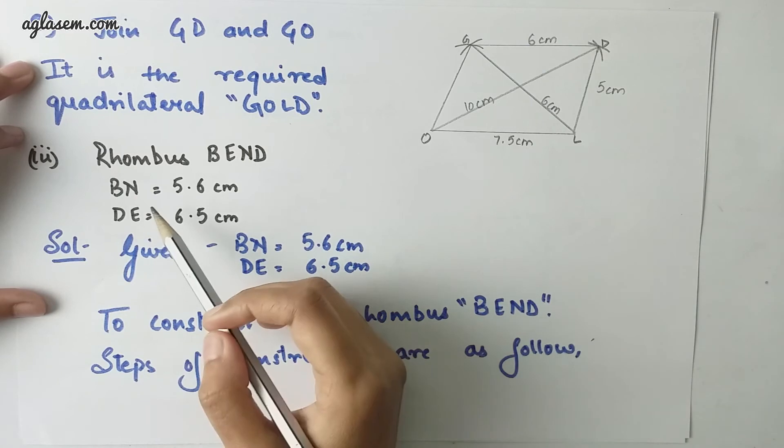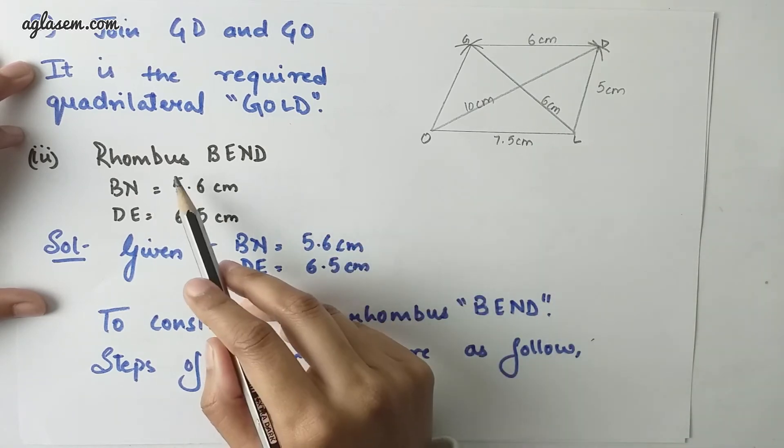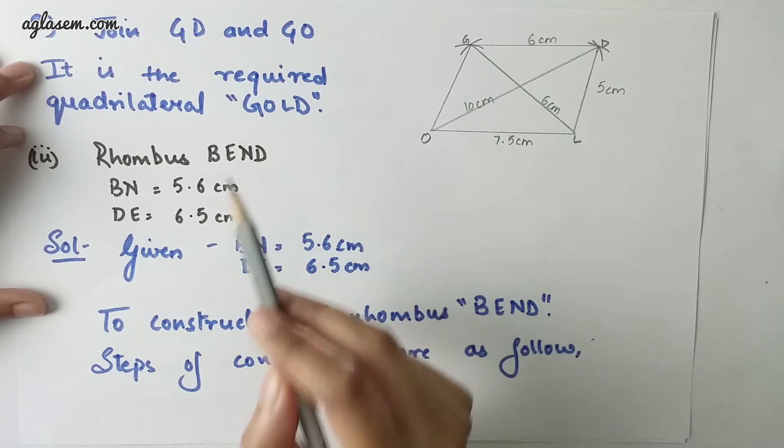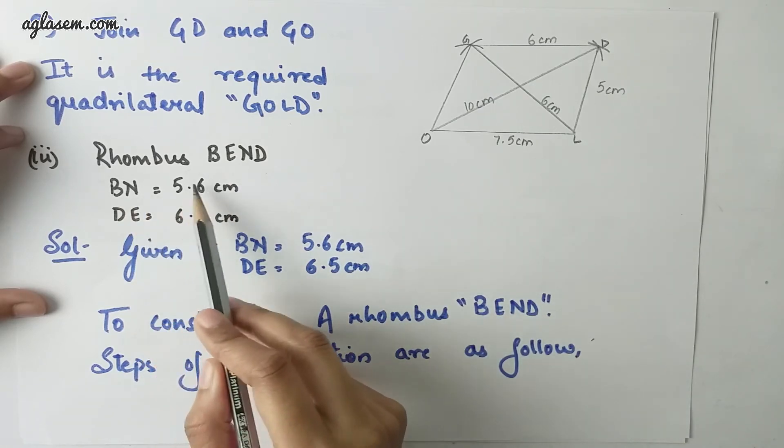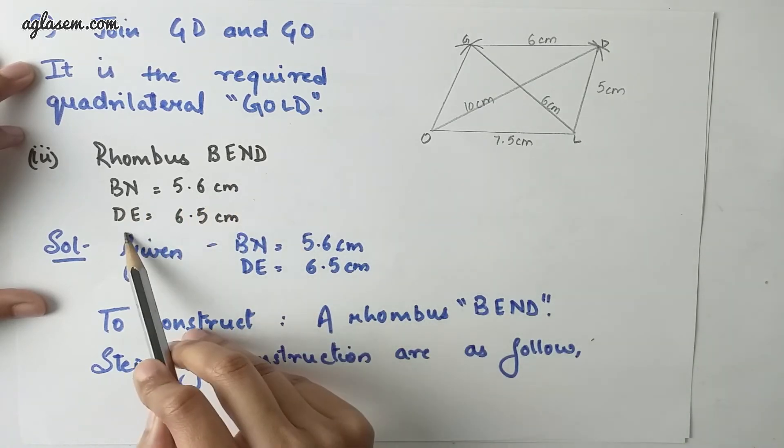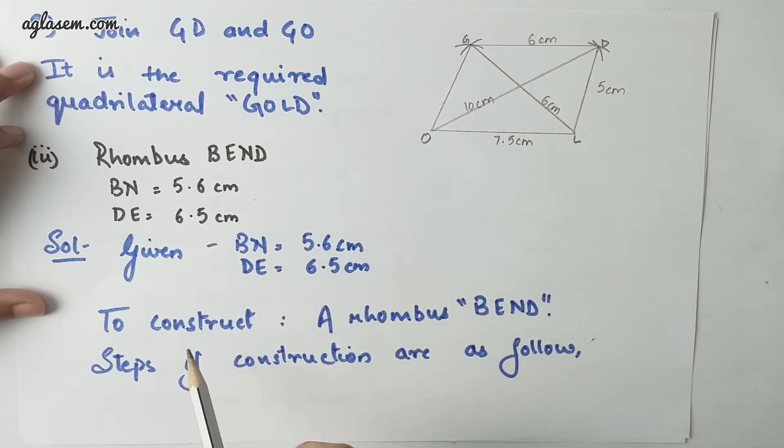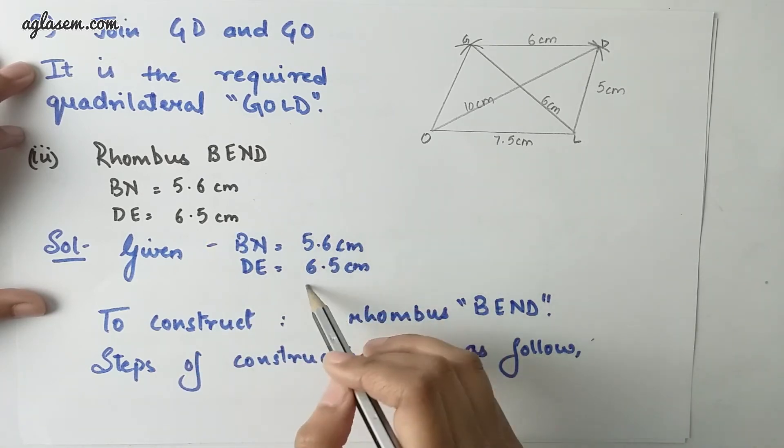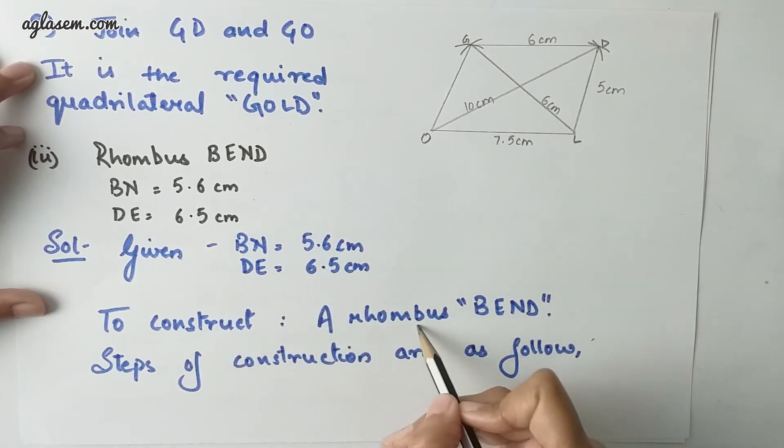Moving to the third part of the same question, we have to construct a rhombus BEND in which BN is 5.6 cm and DE is 6.5 cm. All these are the given values and to construct a rhombus BEND we have to follow several steps.